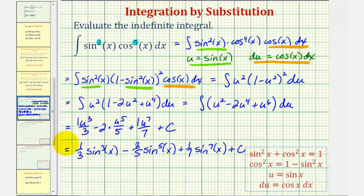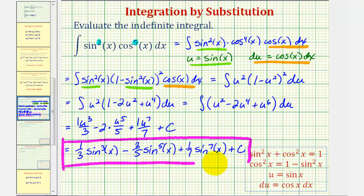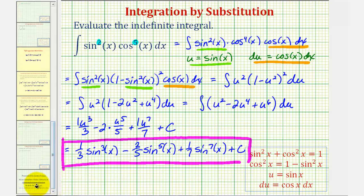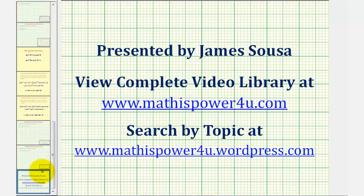Writing this in terms of x by substituting sine x for u, our antiderivative is one-third sine cubed x minus two-fifths sine to the fifth x plus one-seventh sine to the seventh x plus C. To summarize: when there is an odd factor of cosine x, save one factor of cosine x and let u equal sine x.